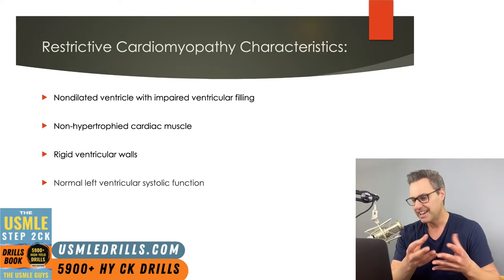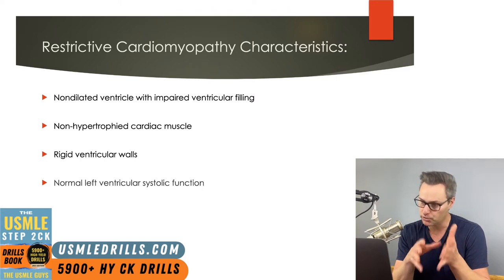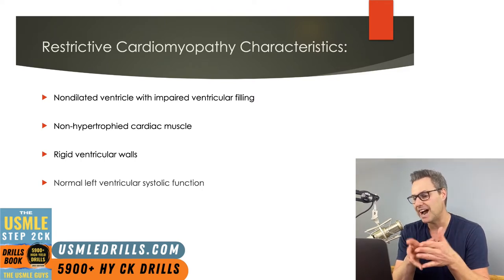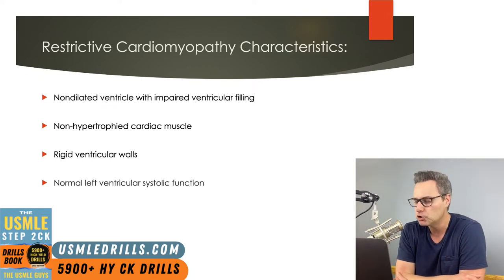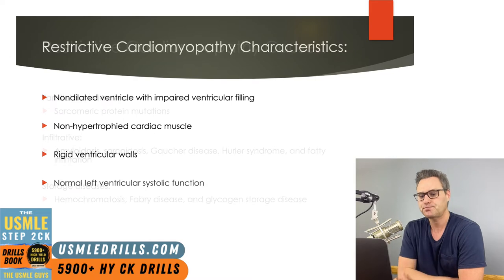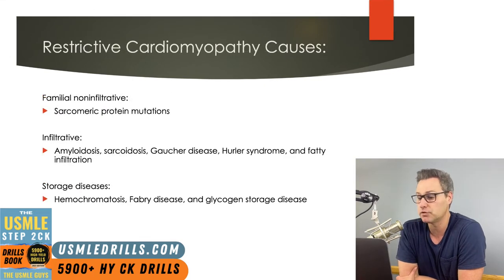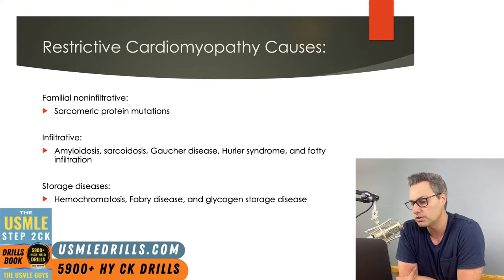Cardiac amyloidosis is one of the most common kinds of restrictive cardiomyopathy. Another distinguishing factor from dilated is an impairment in ventricular filling. The main problem is that the ventricular walls are very rigid, but still — especially early in the disease — you should expect normal left ventricular systolic function. There are three main causes of restrictive cardiomyopathy: familial non-infiltrative, infiltrative, and storage diseases. Familial non-infiltrative includes patients with a genetic sarcomere protein mutation that results in a restrictive pathology.